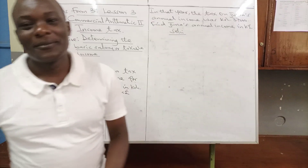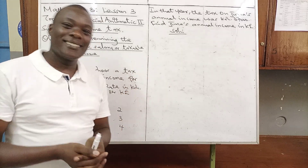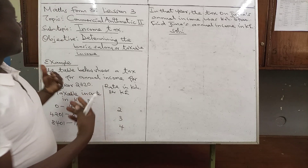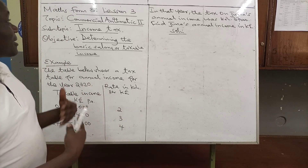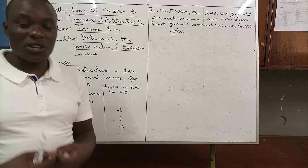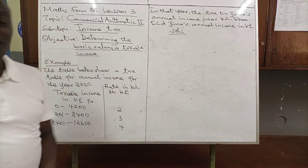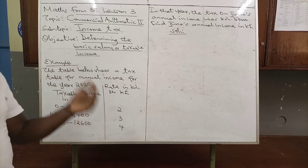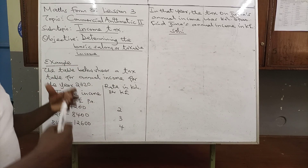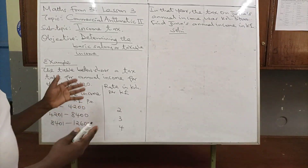Good evening. Hope you are doing well over there. Today we are looking at a math lesson number three, which means it is a continuation lesson. The topic is commercial arithmetic two, subtopic is income tax. Our main objective is to determine the basic salary or taxable income.